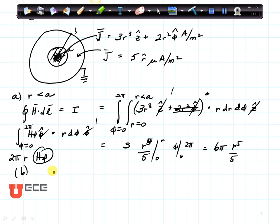Now let's do part B. For part B, I want the radius to be in between a and b. That's this region out here.